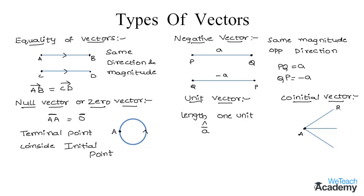And the other ends of the three line segments as B, C, and D. So the co-initial vector is nothing but two or more vectors having the same initial point. So we observe that the vectors AB, AC, and AD have the same initial point A.